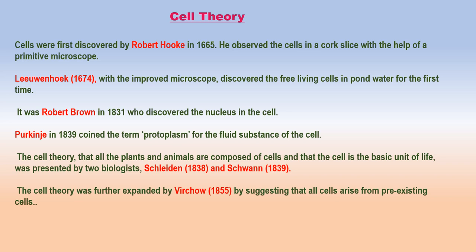However, Hooke had only seen the thickened walls of the cells and not the substance contained within these walls. In 1831, a Scottish botanist Robert Brown discovered and named the nucleus in plant cells. J. Purkinje, a Czech animal physiologist, in 1839 gave the term protoplasm for the living fluid substance present inside the cell. In 1866, Haeckel established that the nucleus was responsible for storing and transmitting hereditary characters.